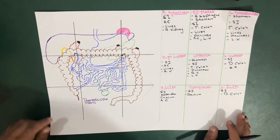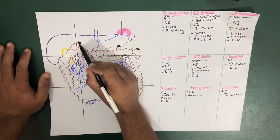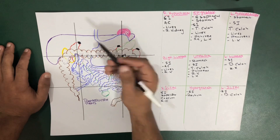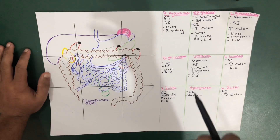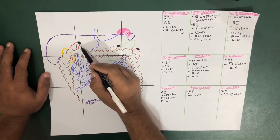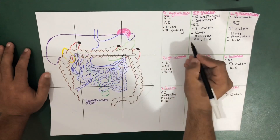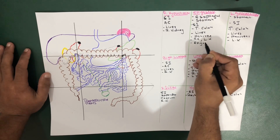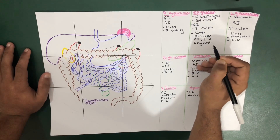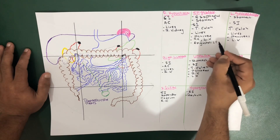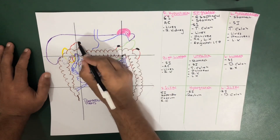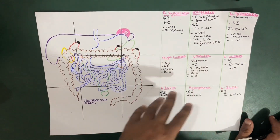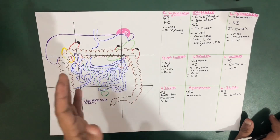On top of the kidney you can see this black structure — these are actually the adrenal glands. So if anyone asks where the adrenal glands are located, they are in the epigastric region. Both the left and right adrenal glands are present in the epigastric region.